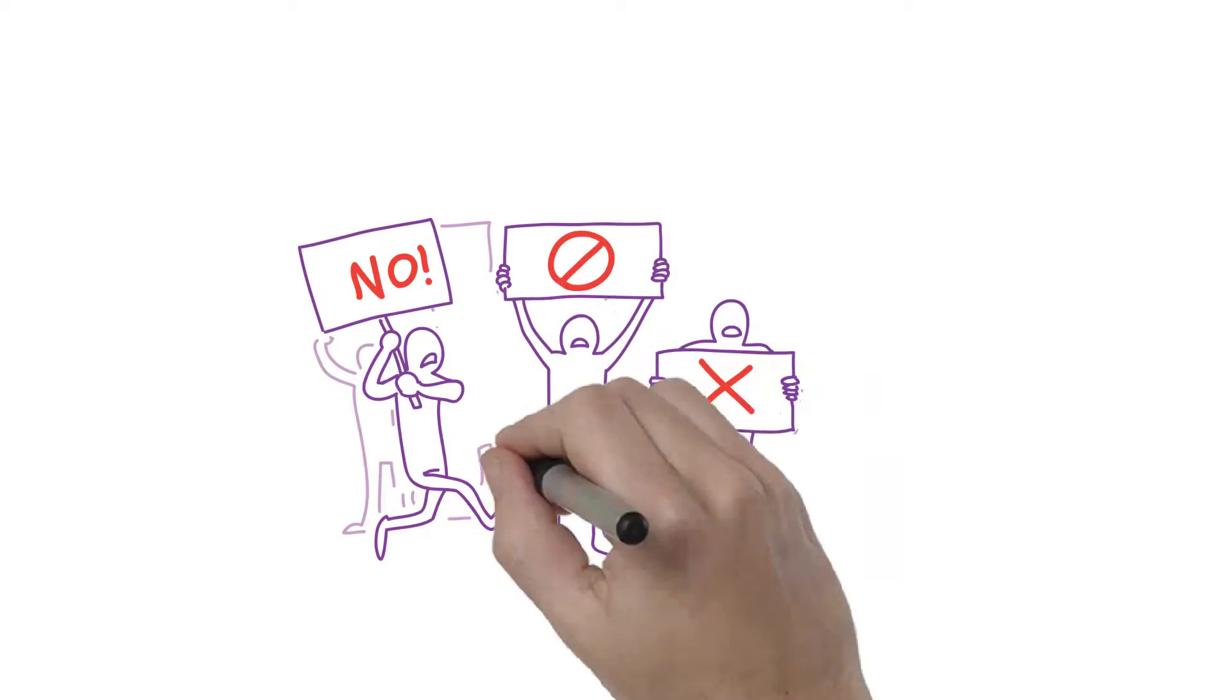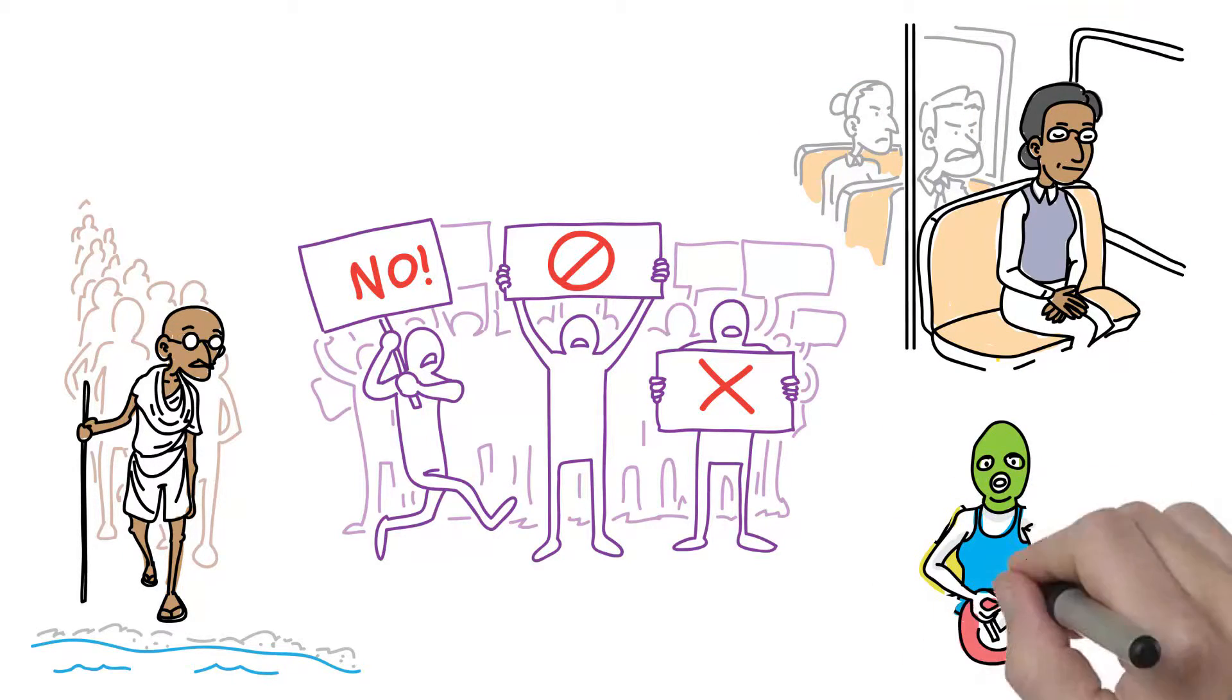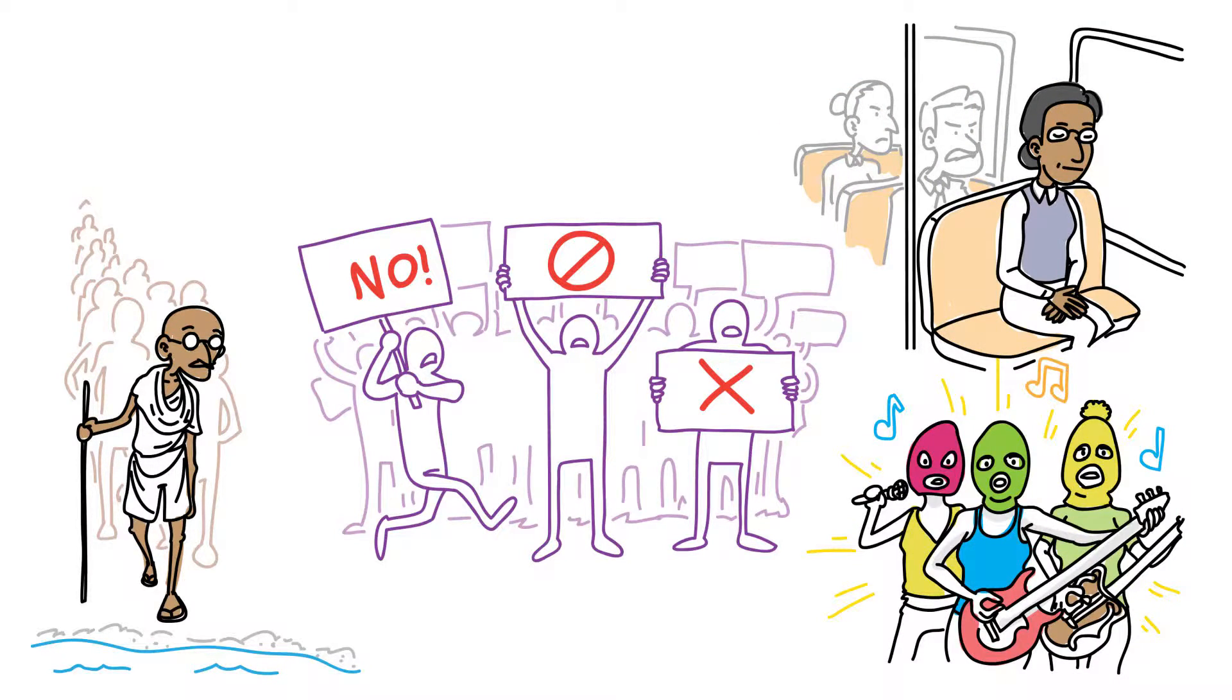They made a plan and recruited some friends. And step-by-step, action-by-action, victory-by-victory, they got their message out there and challenged the status quo.